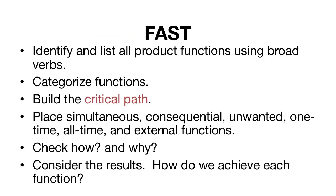So in general, let's go over the FAST process again. First, we identify and list all the product functions, making sure to use broad verbs. We can categorize the functions as either essential functions, simultaneous functions, consequential functions, or all-time functions. It's a good idea to start a FAST diagram by building the critical path. Make sure to ask how as you move to the right of the diagram, and why as you move from right to left. This will ensure that you've correctly built your critical path. Then consider the results — since we've given our functions in very broad terms, we've left ourselves open to find new means for achieving each function.